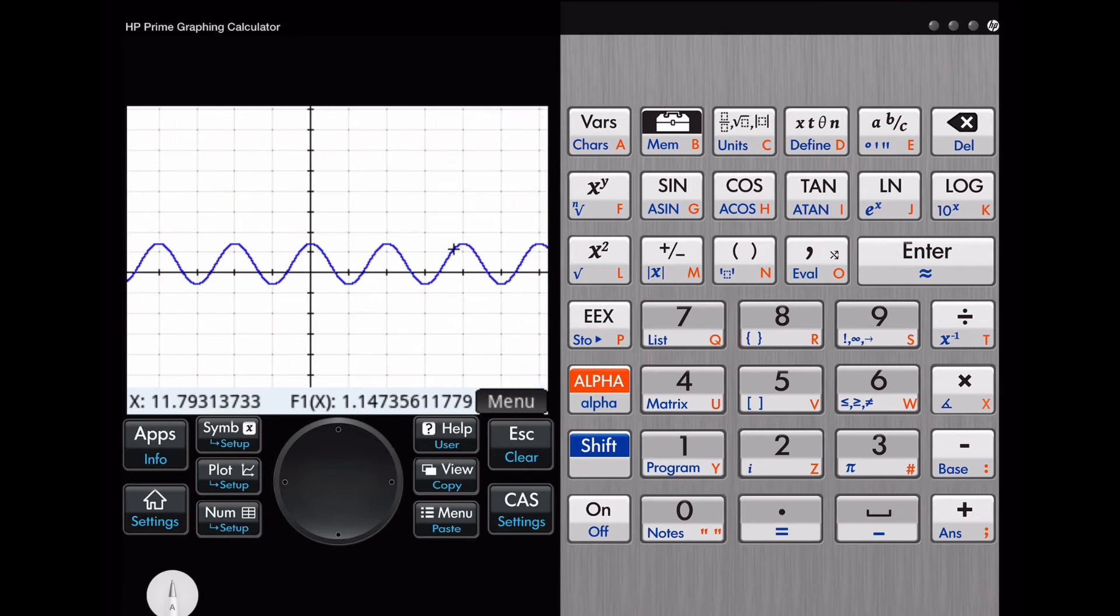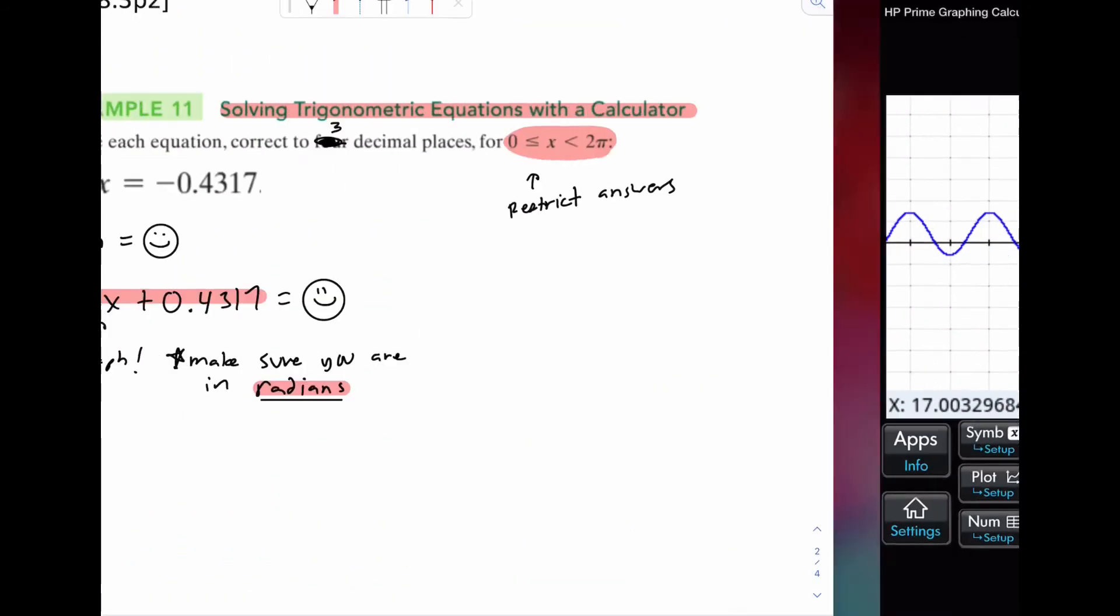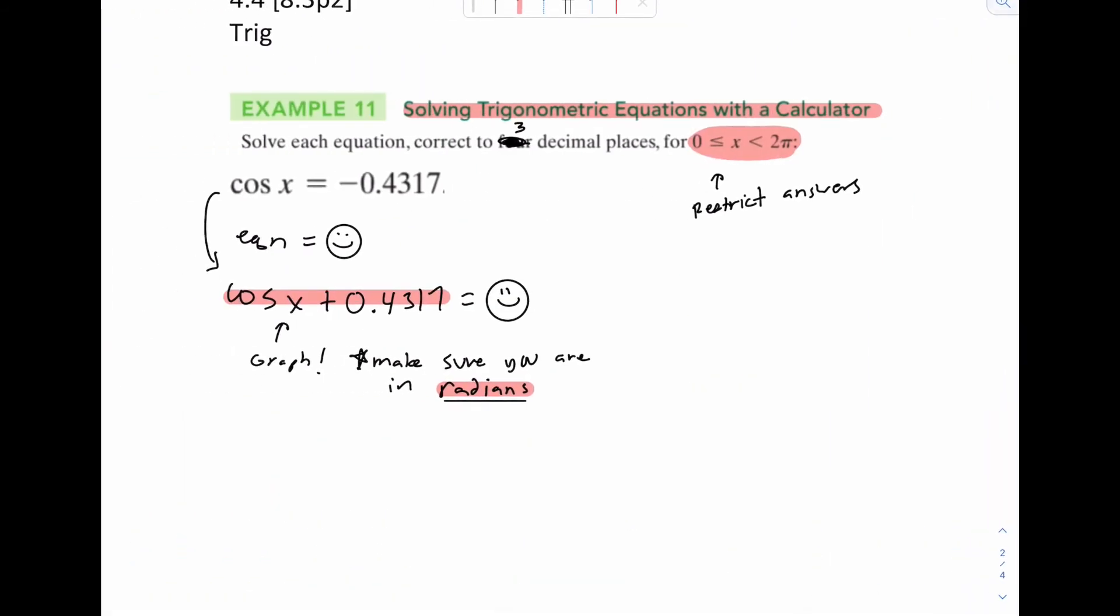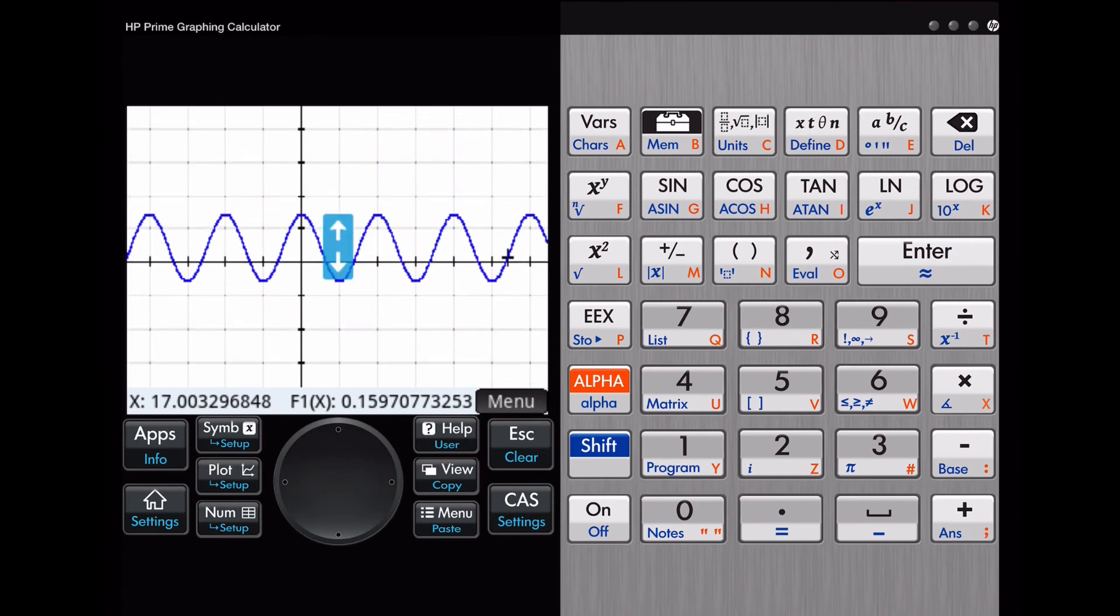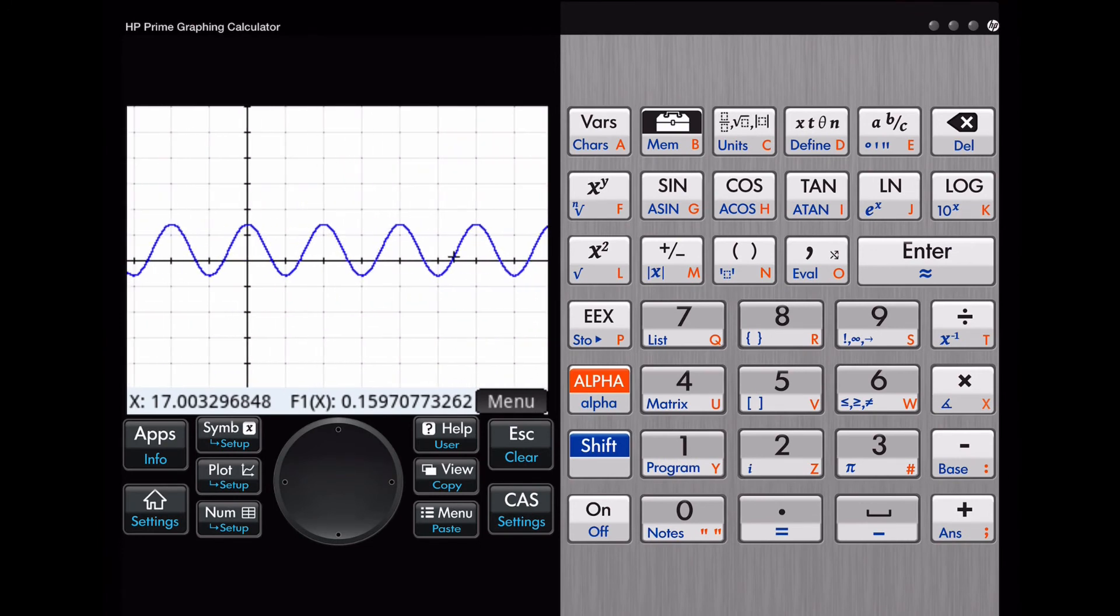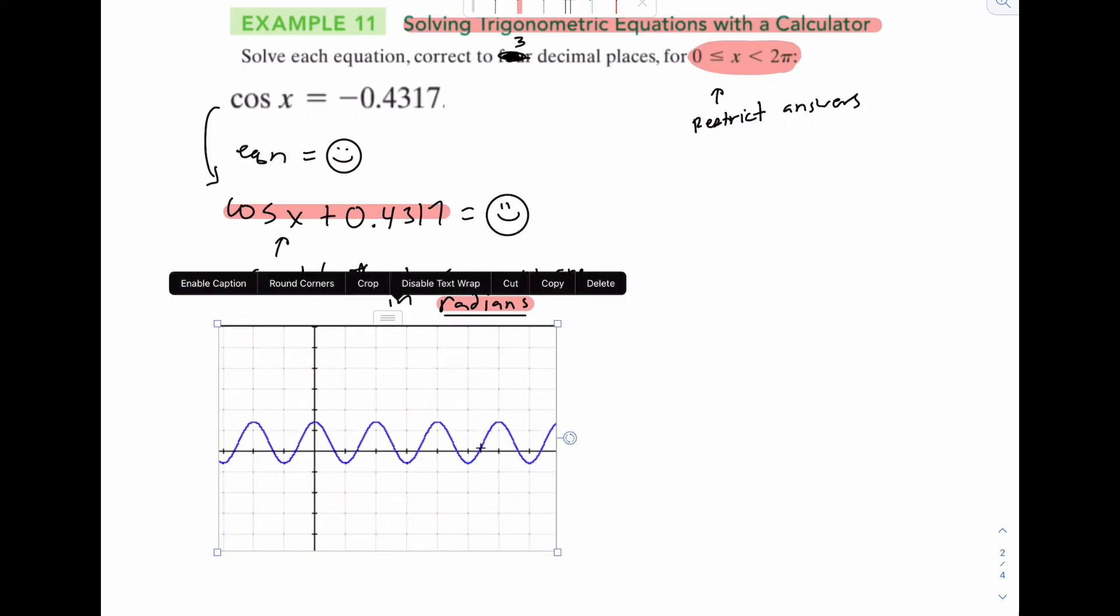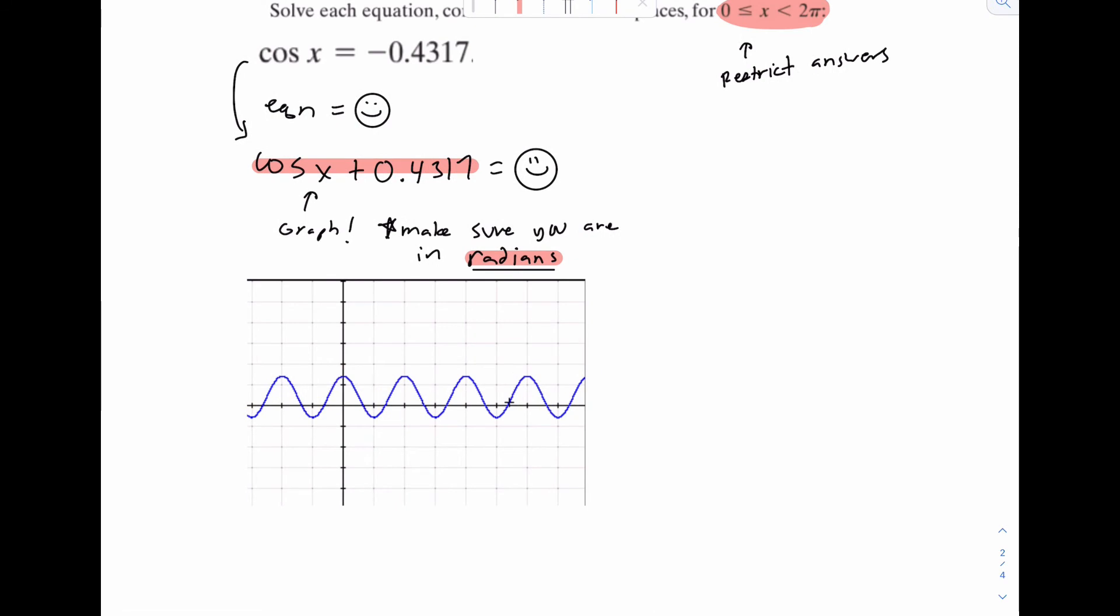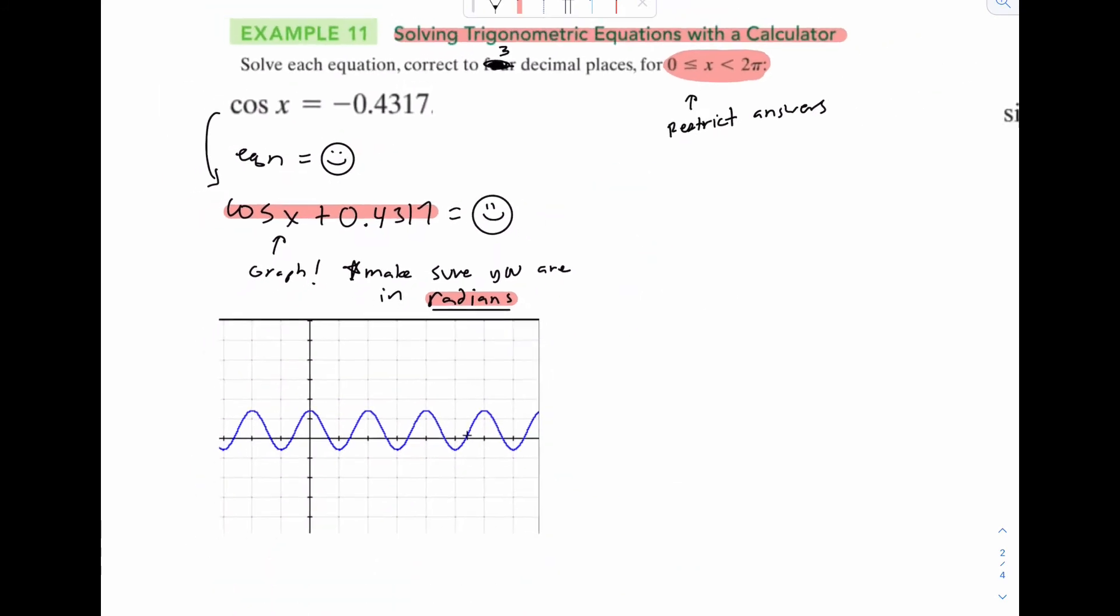I'm going to type in cosine x plus 0.4317 and graph. So notice how there are a number of solutions here. There's this one right here, this one, this one, they go forever. We only want the ones that are, if you remember your notes here, zero to two pi. That's why this restriction is here. So first thing we're going to do is just take a screenshot of this thing right here. Right about here should be fine. Okay, so here's the graph that we're looking at. And again, what we're doing is send this equal to zero right here.